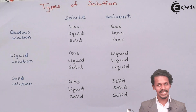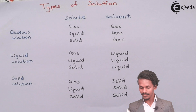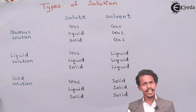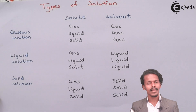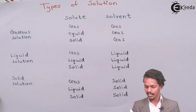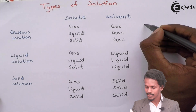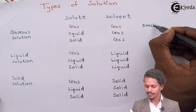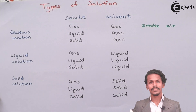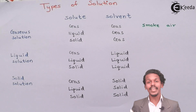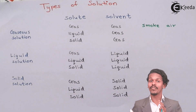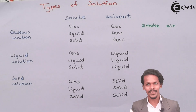Let me give you an example of each type. For gas in gas: all gases form homogeneous mixtures with each other. Examples include smoke and air, where various gases like carbon dioxide and water vapor are mixed together and cannot be differentiated from one another.